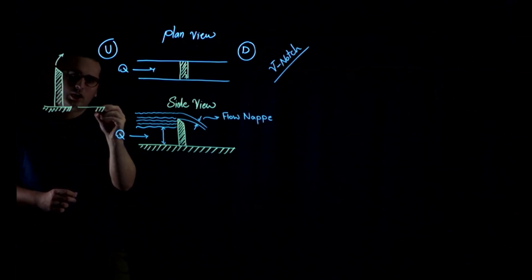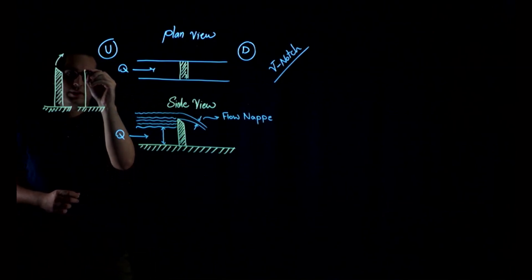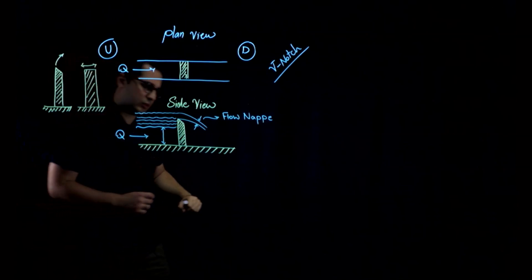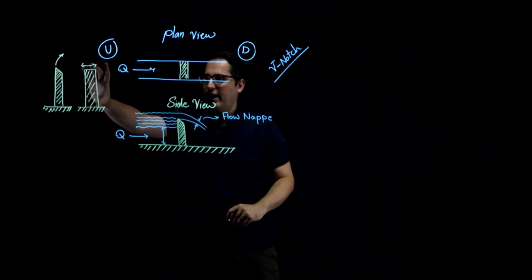And the other type is broad-crested weir. As its name suggests, the top of it, the crest of it, is broader. Right over here. So there are different uses for sharp-crested weirs and broad-crested weir.